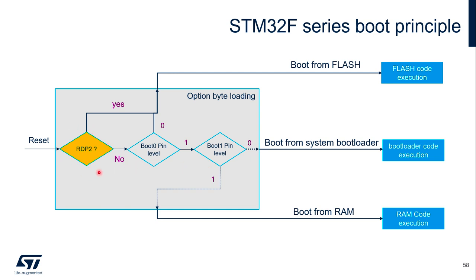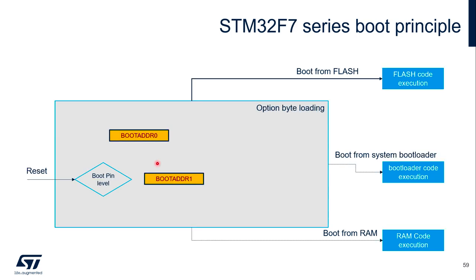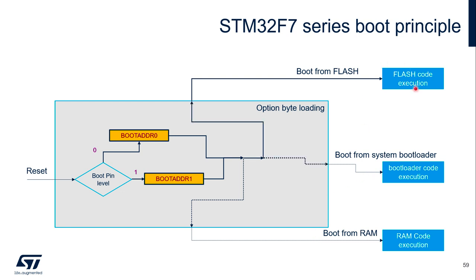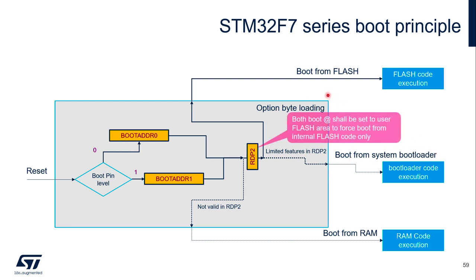When RDP level 2 is set, booting from user flash is forced. On the F7 series, two more option bytes are introduced. The boot pin decides whether to use the address from boot address 0 or boot address 1 option byte, and both addresses could be programmed to point to internal RAM, system bootloader, or internal flash. However, when RDP level 2 is set, booting from RAM is not possible, and only very limited features are provided from the system bootloader, so both addresses should be enforced to point to the user flash address.